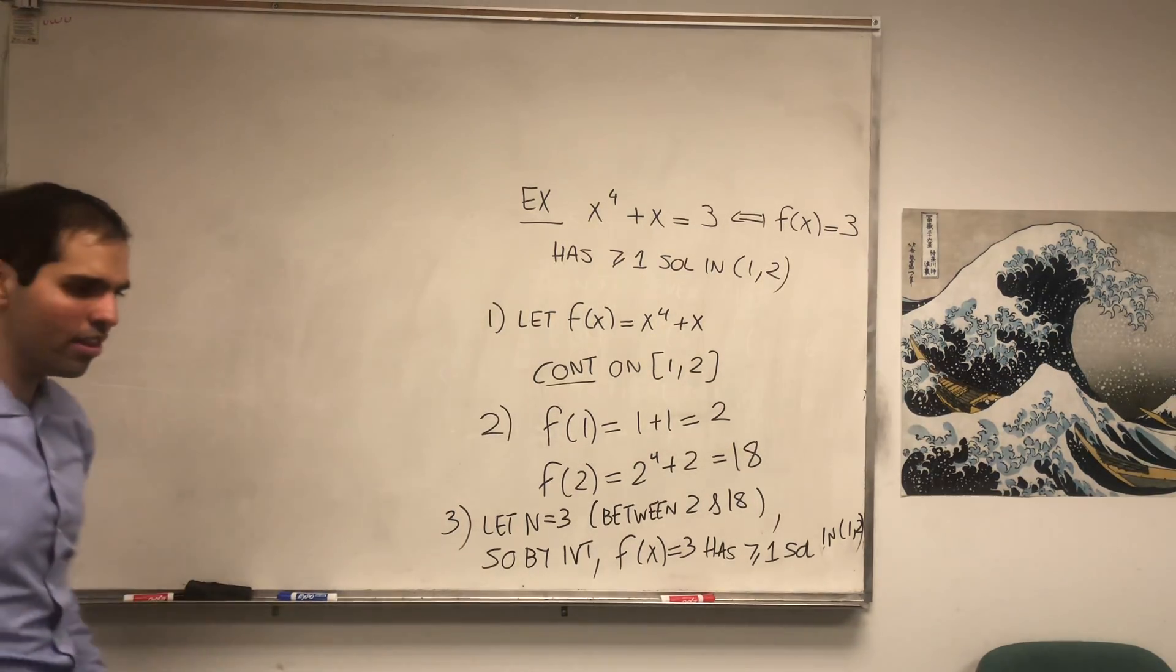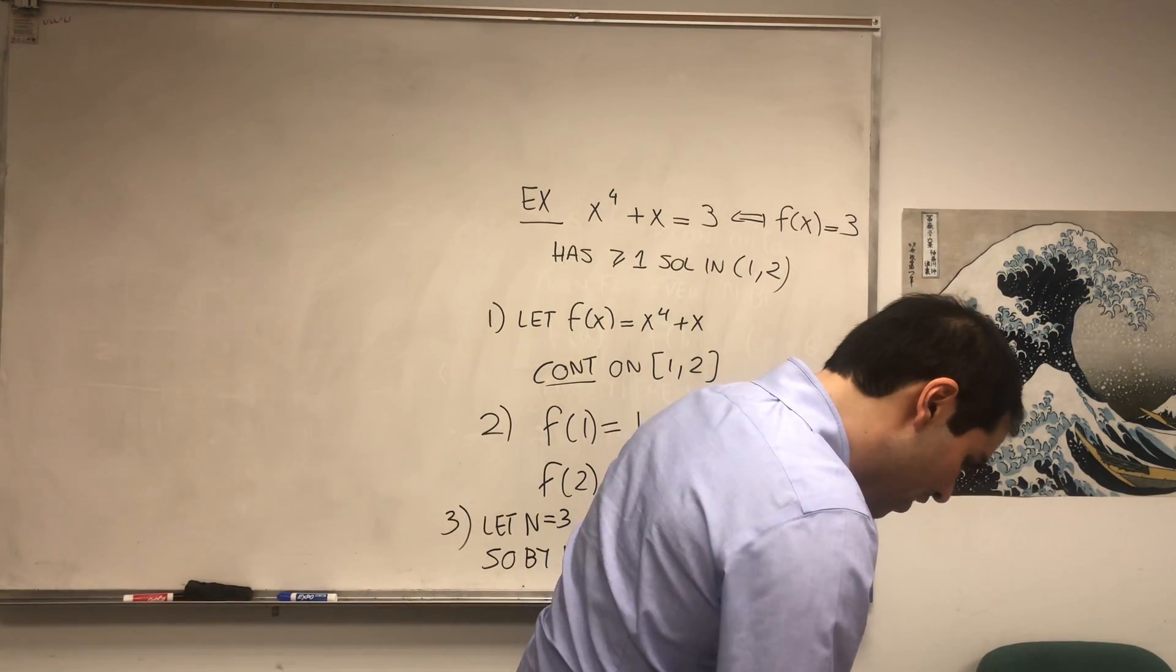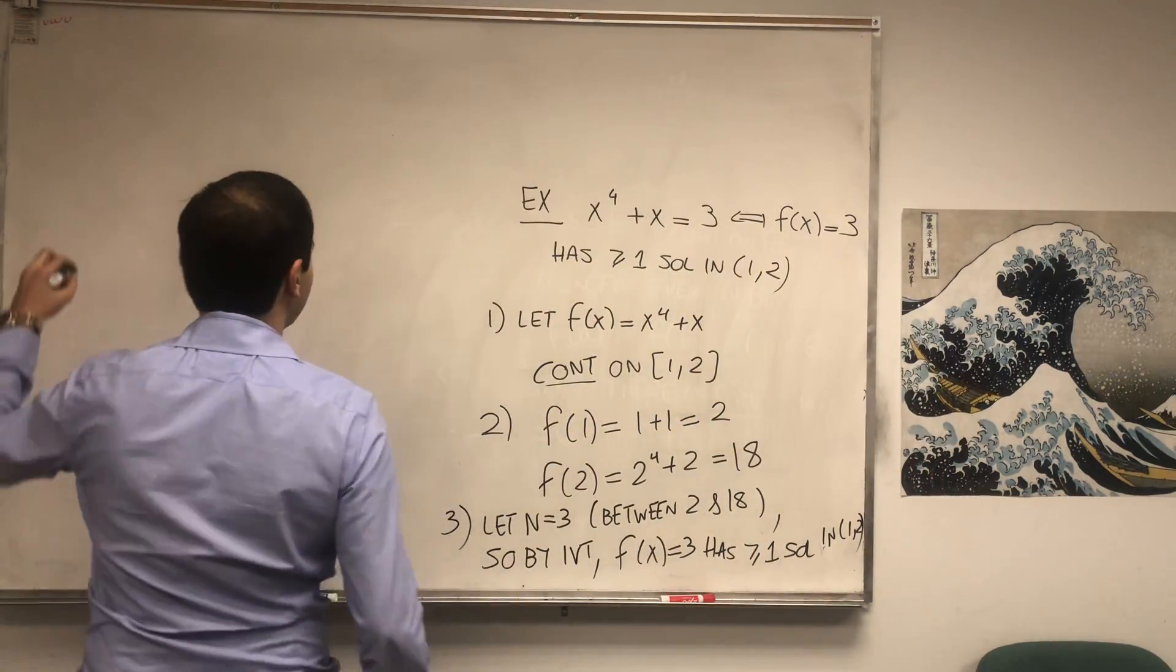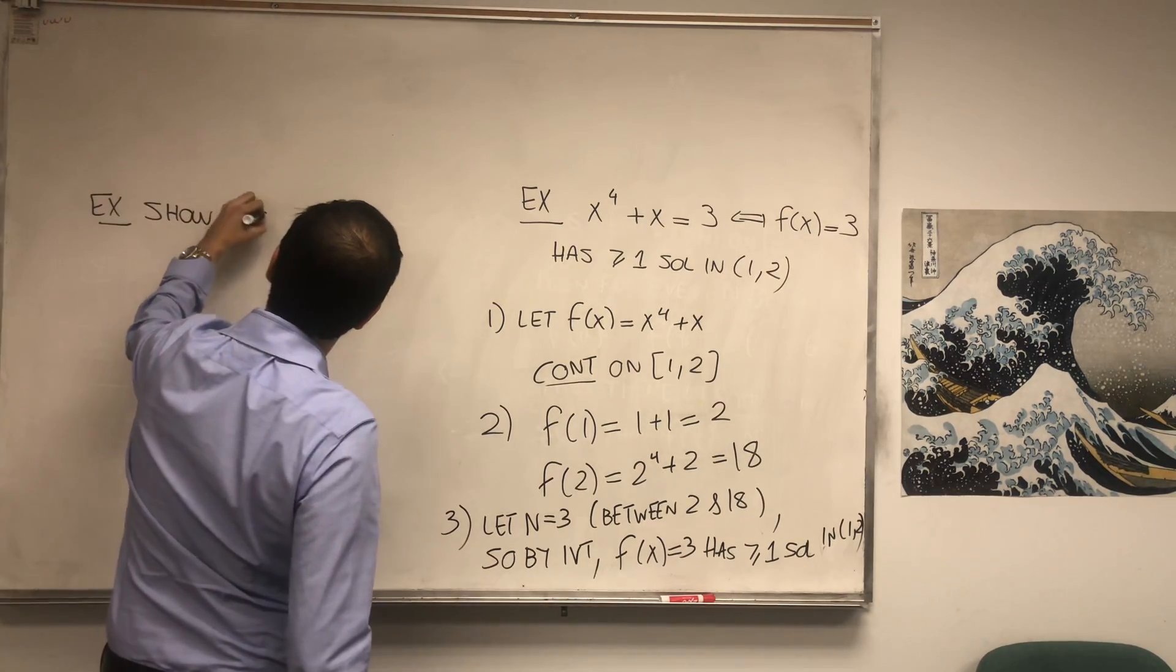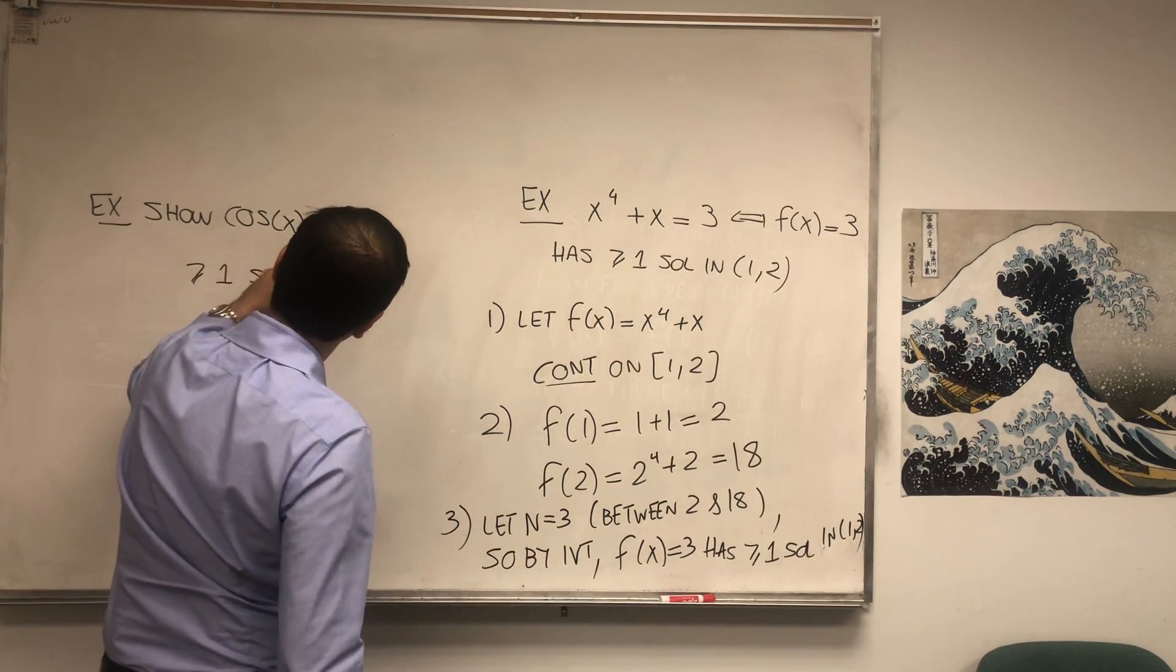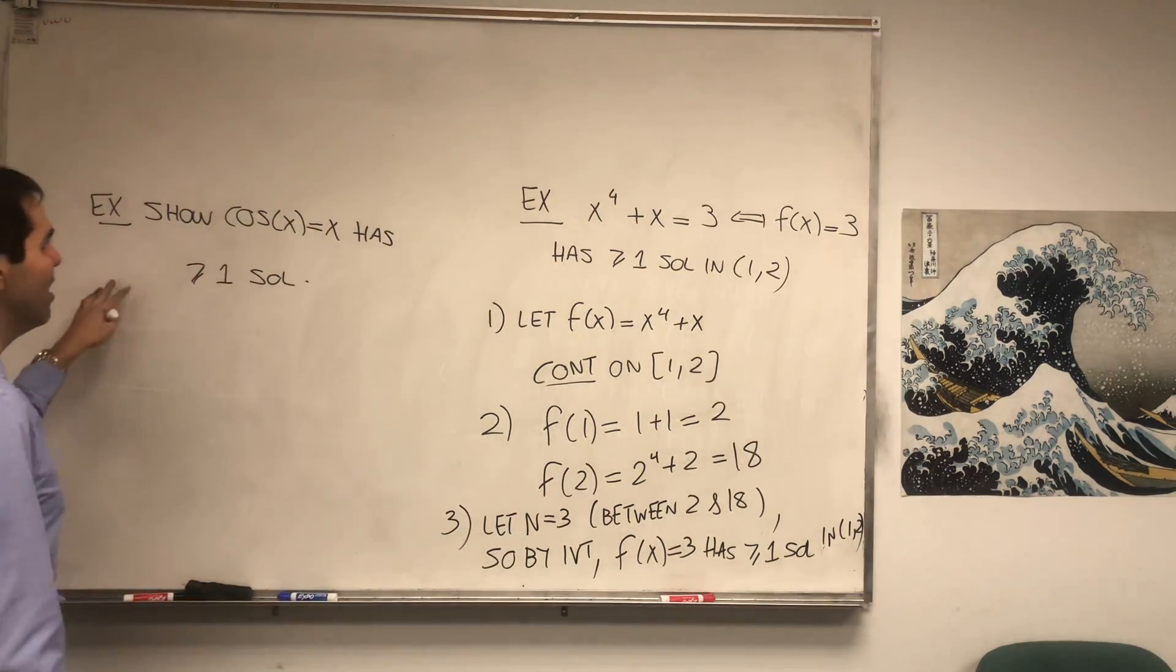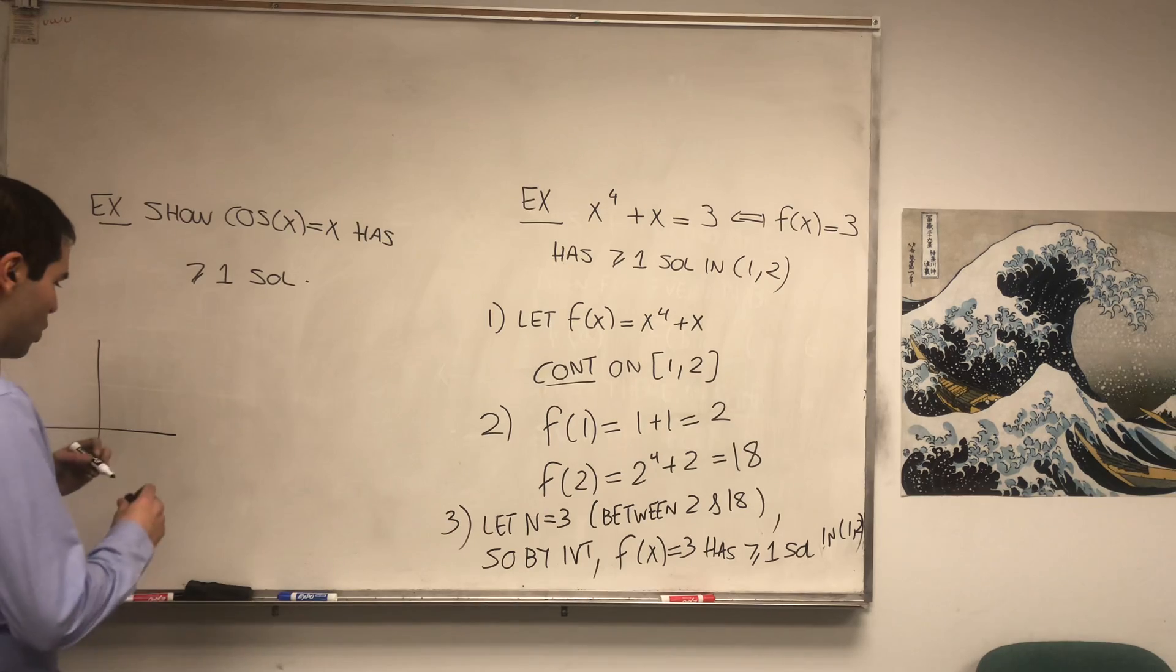We can do more than that. Maybe let's move on with the following example. So what about the following one? Show cos(x) = x has at least one solution. And here, I didn't even write down the interval, which makes it a little bit harder. But in other words, picture-wise, what we want to show is that this is cosine.